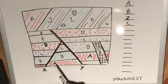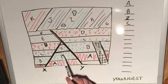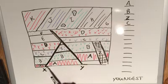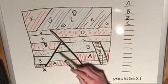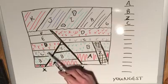This fault, X right here, is what appears to be a—let's see, here's the footwall, here's the hanging wall—it appears to be a normal fault because the footwall has been upthrown. See, C here is higher than C here, B here is higher than B here.